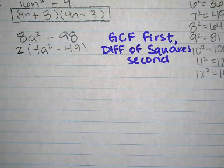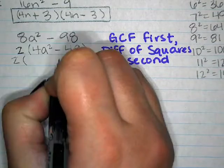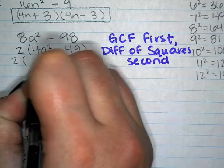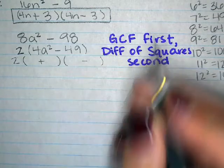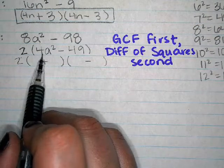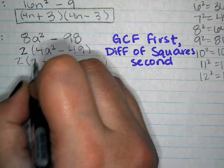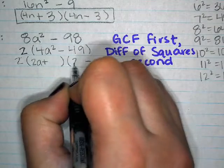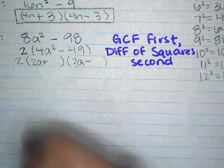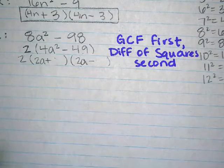Now we've got the 2 out front and we do difference of squares on 4a-squared minus 49. Two sets of parentheses, one with a plus, one with a minus. For 4a-squared the square root is 2a, so we get 2a and 2a in the first spot. For 49 the square root is 7, so 7 and 7 in the second spot. Final answer: 2(2a plus 7)(2a minus 7).